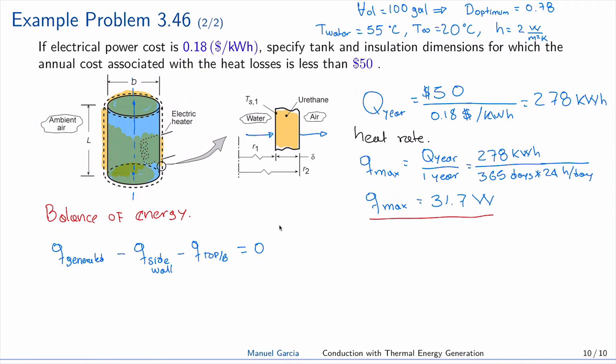In other words, we have that Q_max equals Q of the side walls plus Q of the top and bottom. Q of the side: we have a temperature at this point called T_S1, and on the air we have T_infinity. So the extreme temperatures are T_S1 minus T_infinity divided by the total resistance.